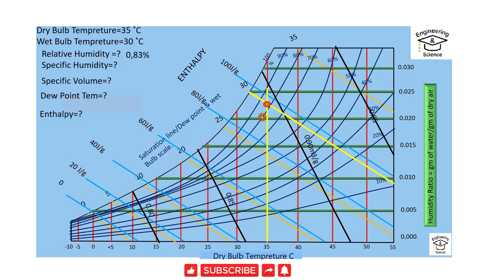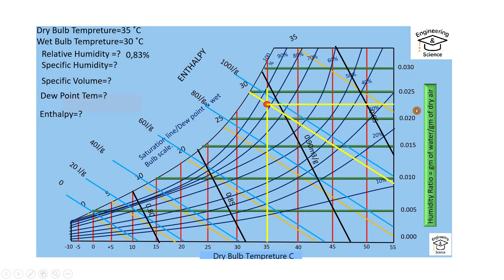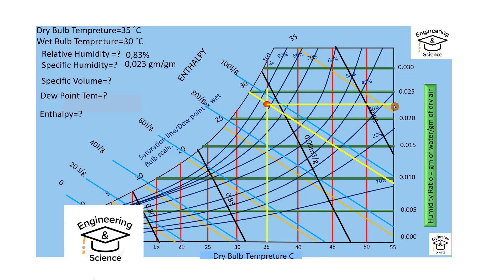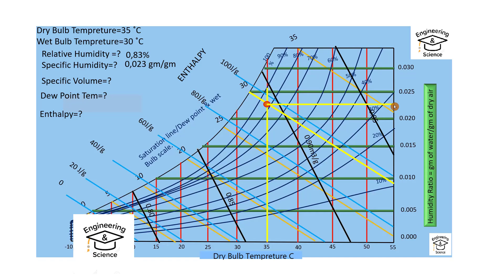The first parameter found was relative humidity. Now regarding specific humidity — as we know, the y-coordinate represents specific humidity. We draw a line parallel to the humidity ratio coordinates, and as we can see it is about 0.023 grams of water per gram of dry air. That is the answer for specific humidity.